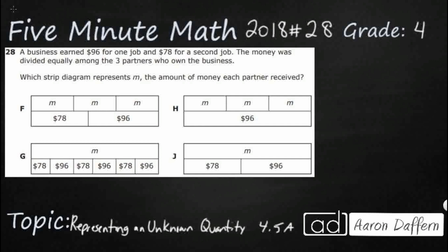So we have a business and it's going to earn money. We've got $96 for one job, we've got $78 for a second job, and then the money was divided equally. I mean they're going to tell you that we're going to use division right there, among the three partners who owned the business. So we're looking for M, and it needs to be in a strip diagram, the amount of money that each partner received.